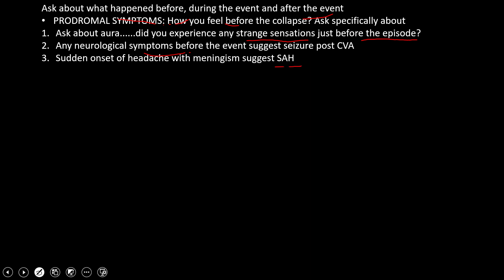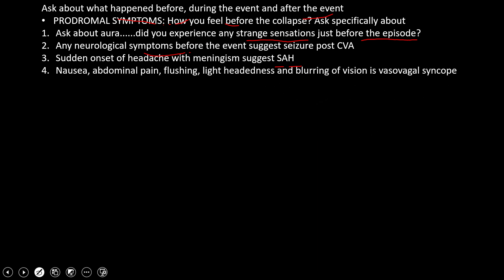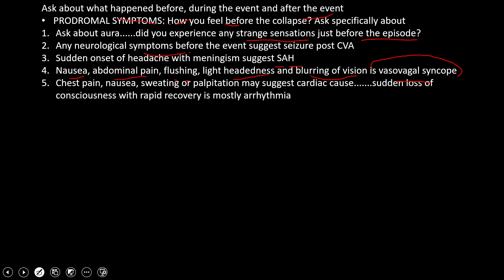We will ask if the patient had nausea, abdominal pain, flushing, lightheadedness, or blurring of vision before the collapse — these are essentially vasovagal symptoms. We will also ask about any chest pain, nausea, and sweating suggesting MI, or palpitations suggesting arrhythmia as a cardiac cause, as well as sudden loss of consciousness with rapid recovery, which mostly indicates arrhythmia.